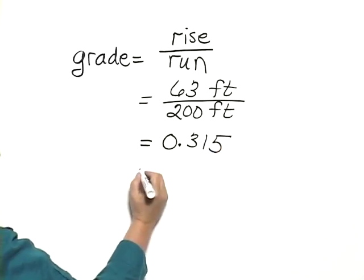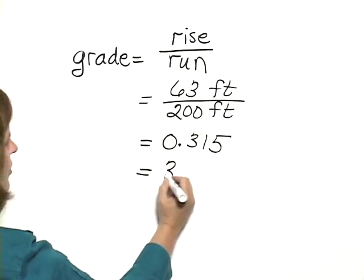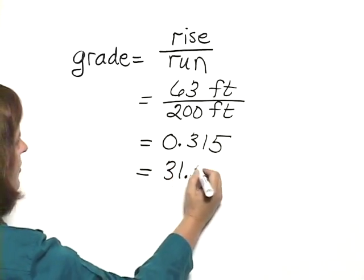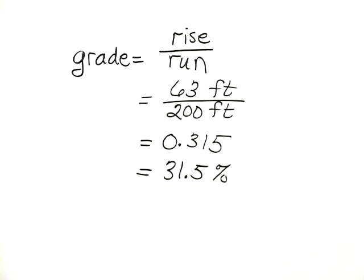Since grades are written as percents, we'll change this to a percent by moving the decimal point two places, and we have 31.5 percent. This would be the grade of the road.